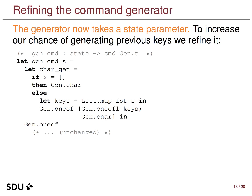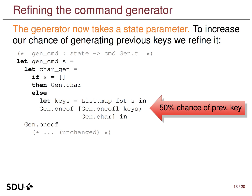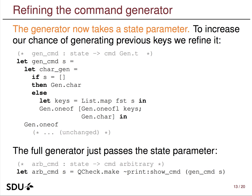You may have noticed the generator's type signature was changed slightly to accept a state parameter. That is handy — say, to increase the chance of generating previously-used keys — for example, add Z and then later generate a find Z. If there are previous entries in the association list, I can List.map over the model to extract the list of keys, then with 50% chance choose between generating one of those characters or falling back on random generation. I pair that up again with my printer, passing along the state parameter, to get a state-dependent full generator.